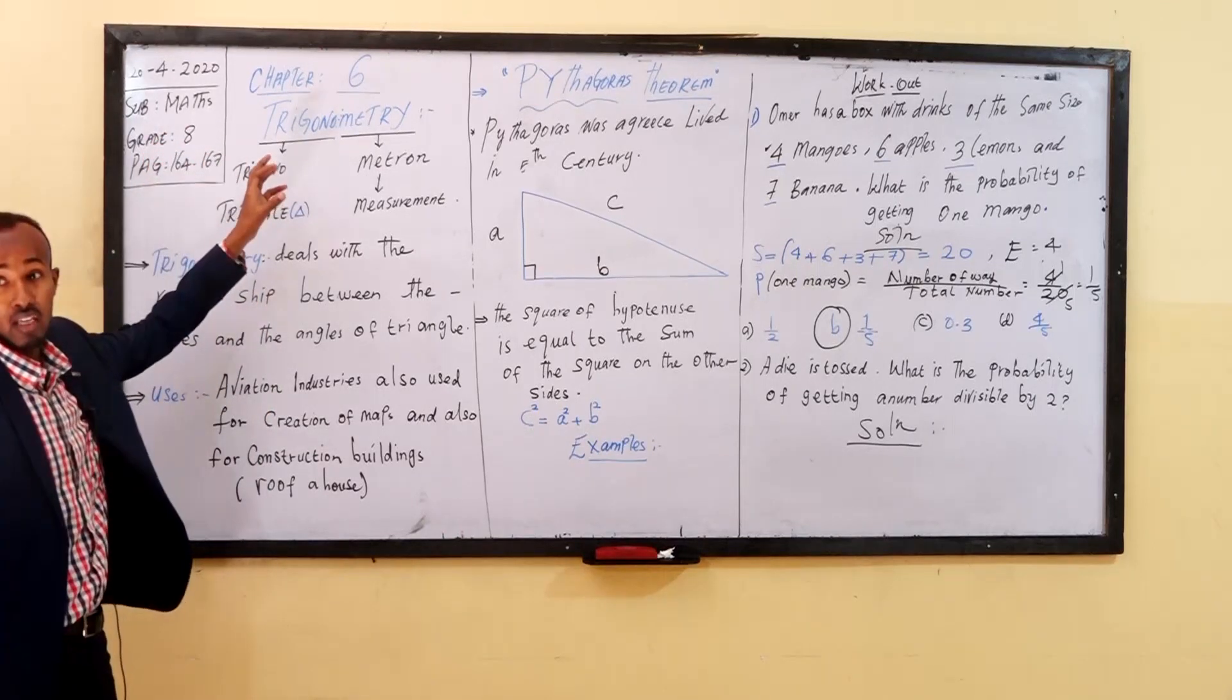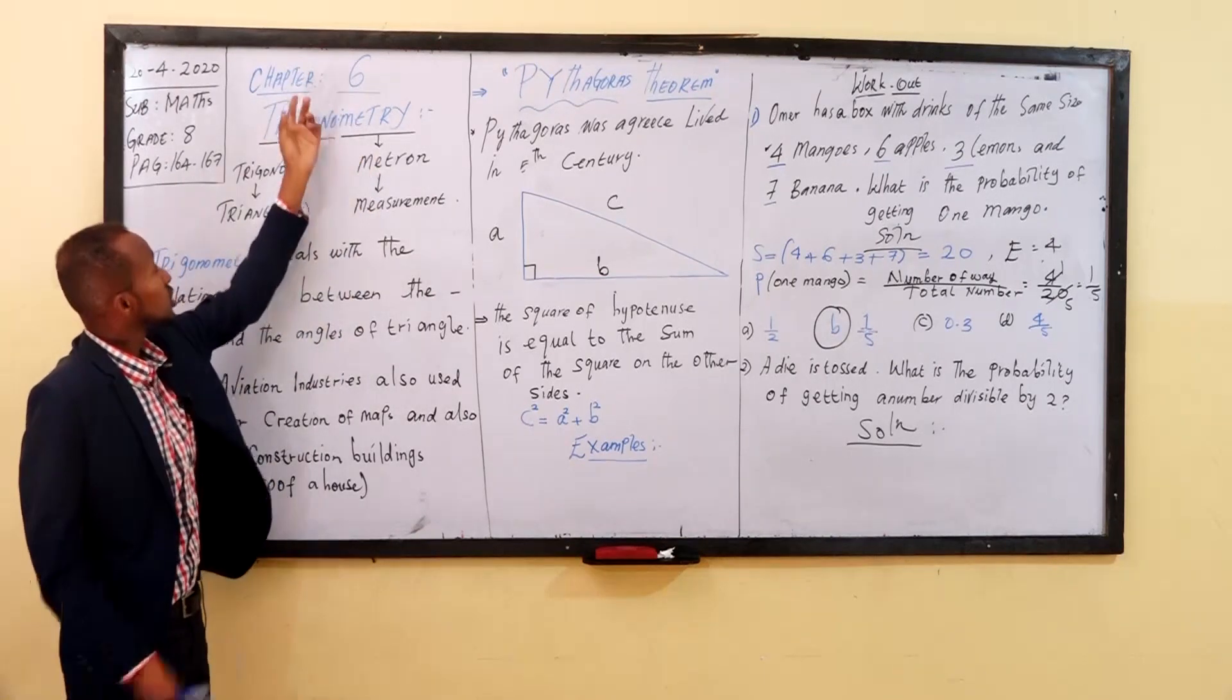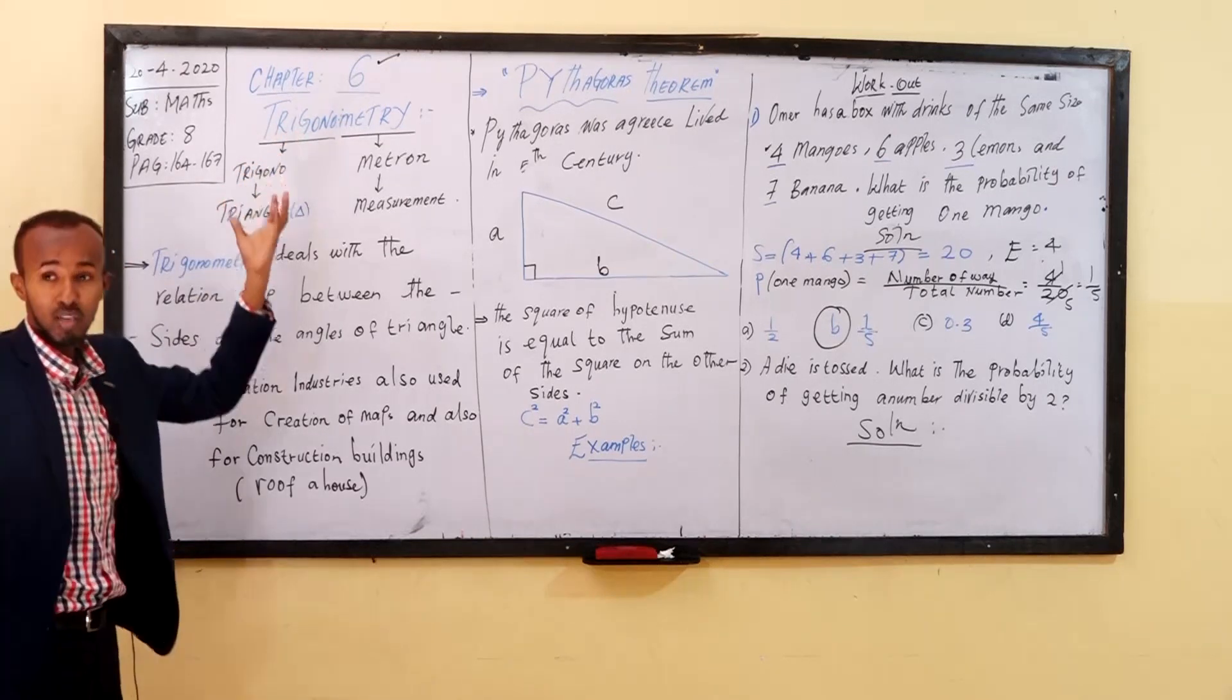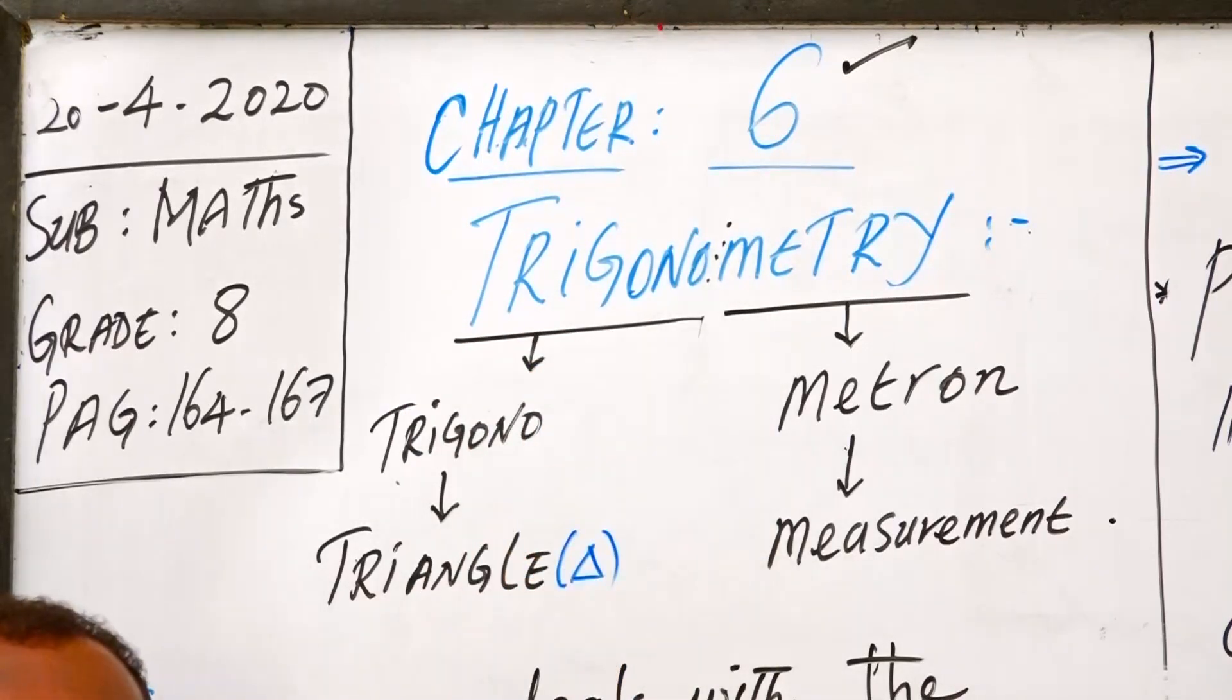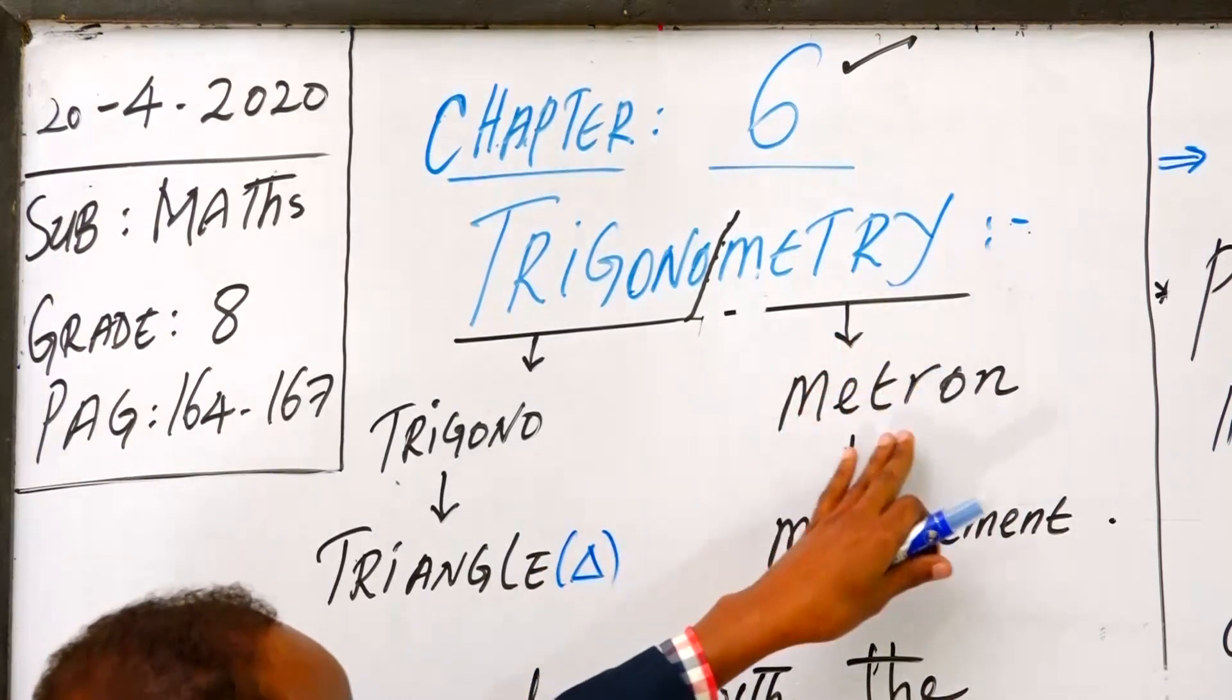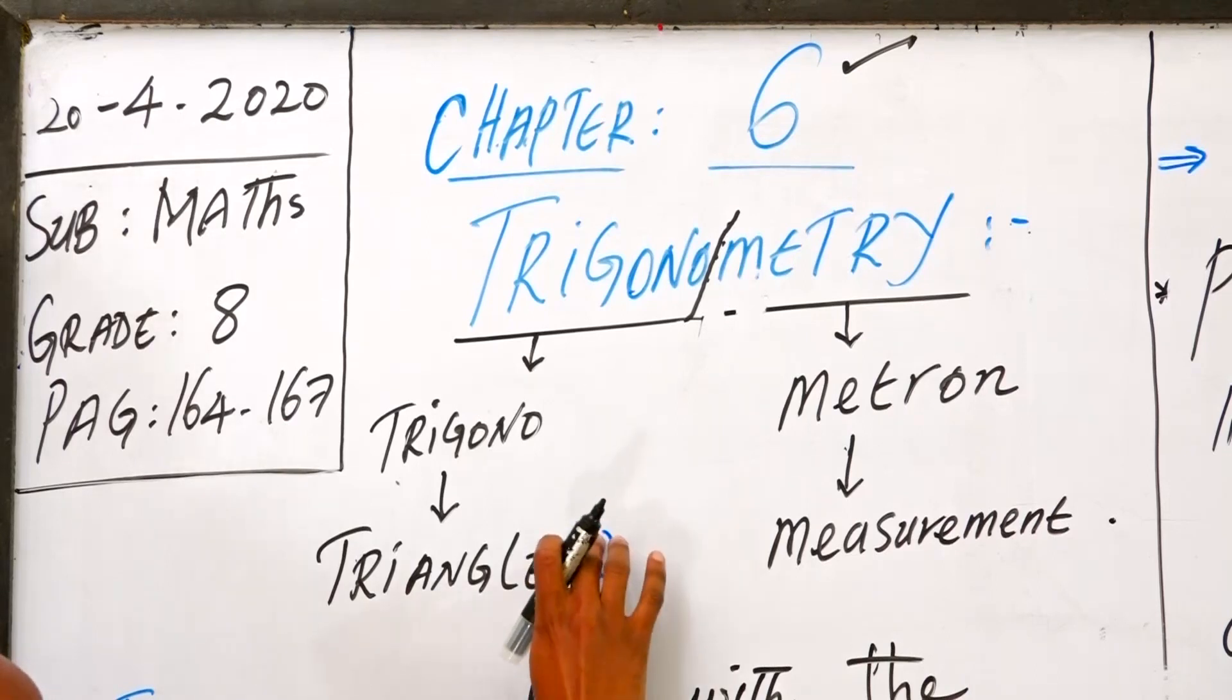In this chapter, we are going to talk about Chapter 6, trigonometry. Trigonometry is a triangle measurement. If you want to go to a meter or another one, you will need to reach any point. If you want to reach the triangle, you can reach every major meter.